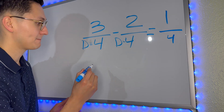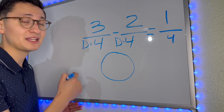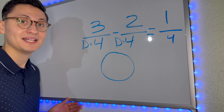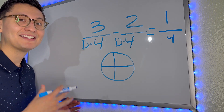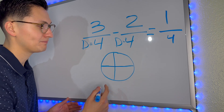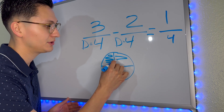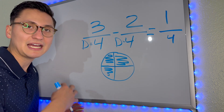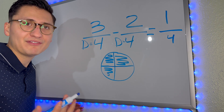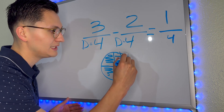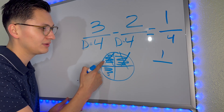Now let's look at it with a picture. If I have a pizza that's cut into how many parts? The denominator tells us how many parts that pizza is cut. So we have four parts. The top number tells us how many slices we have, so we have one, two, three. Let's say you have a pizza and you have three slices out of a possible four. A friend comes over and he eats two — he eats one, he eats two. Now we have one slice out of four.